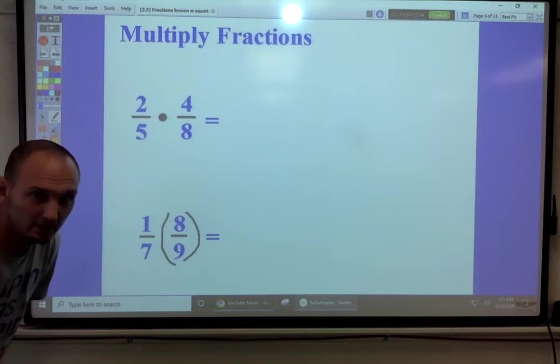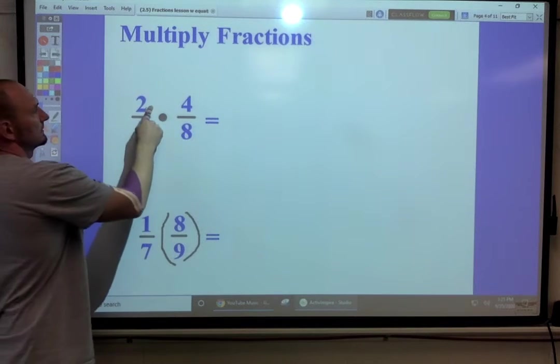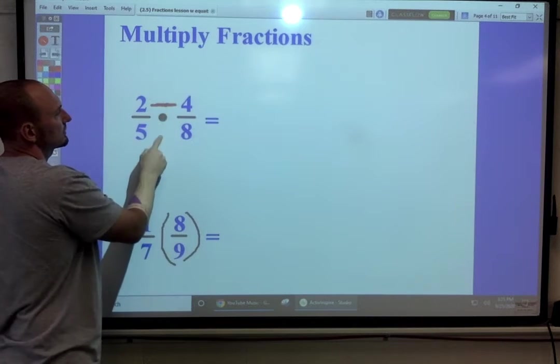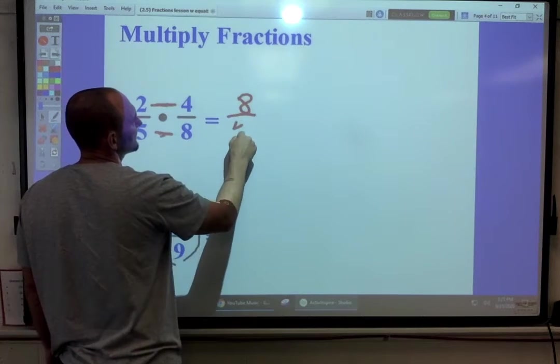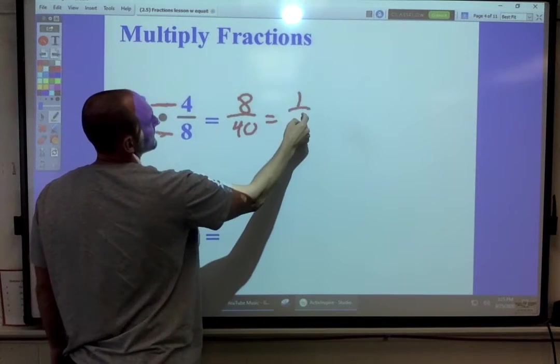Multiplying is way easier. Tops multiply each other. The bottoms multiply each other. We get eight-fortieths, which reduces to one-fifth.